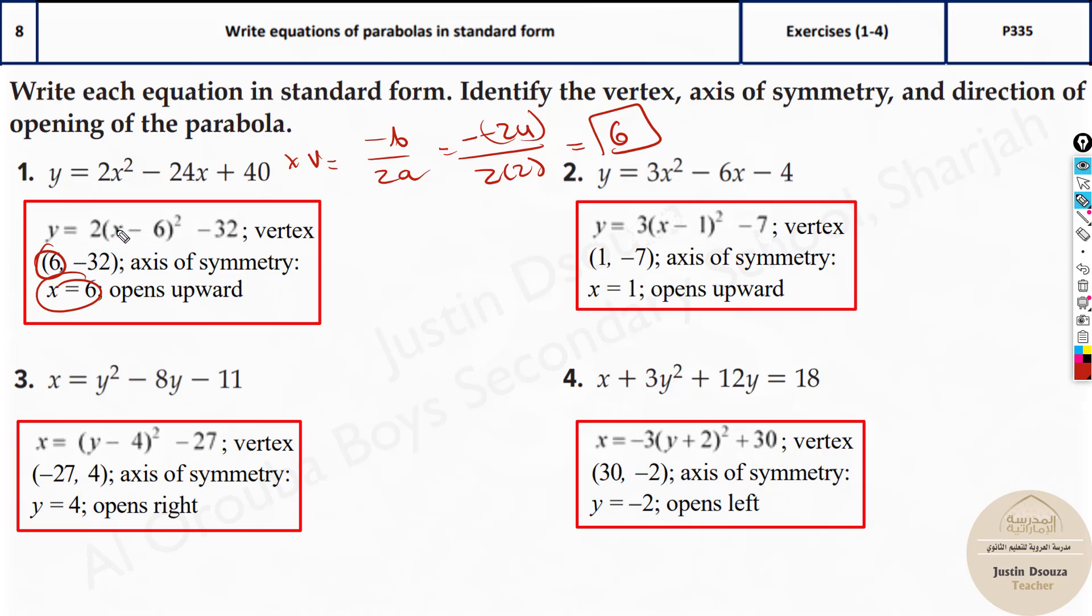If you want to find this, just substitute 6 over here and solve it up. It will be 6 minus 6 is 0. It's minus 32 over here. But this question is about finding standard form, so they have to give you the standard form and the options. And over here, it's the same thing. It's just that the orientation is different.